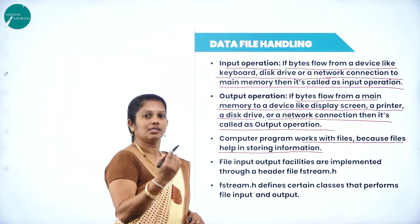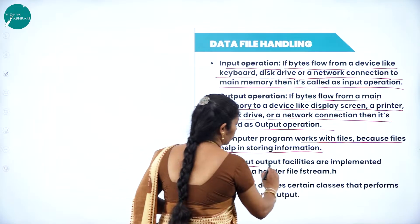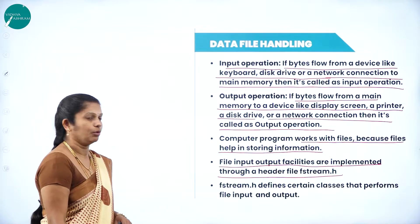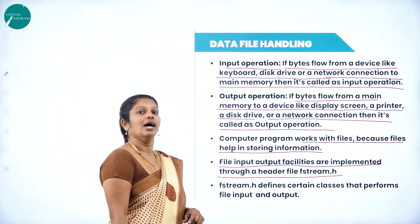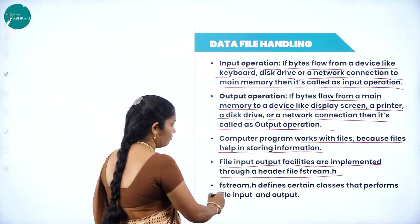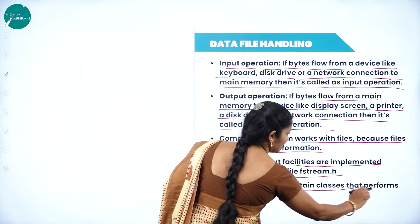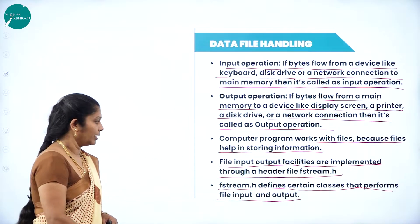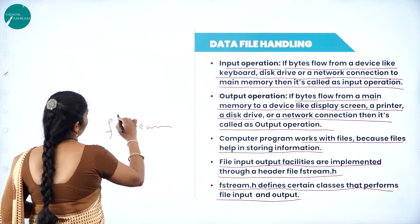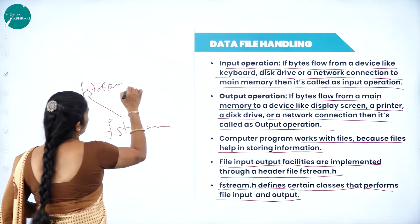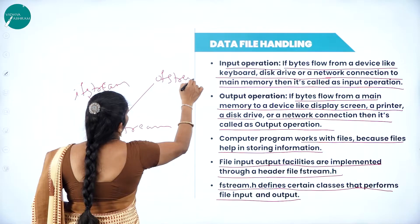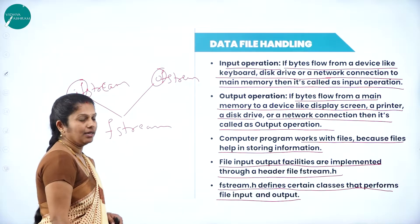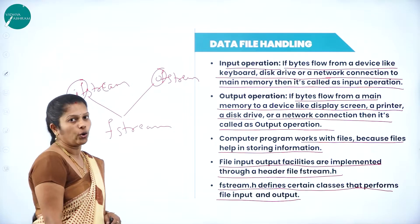File input-output facilities are implemented through the header file fstream.h. fstream.h is the supporting header file for both ifstream and ofstream classes. It defines certain classes that perform file input and output operations. fstream is derived from both ifstream and ofstream — 'if' stands for input and 'of' stands for output operations.